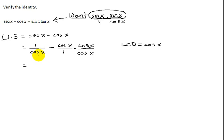So now I'm going to have my common denominator of cosine x under both those terms. And I'm going to have 1 minus cosine x times cosine x which is cosine squared x.